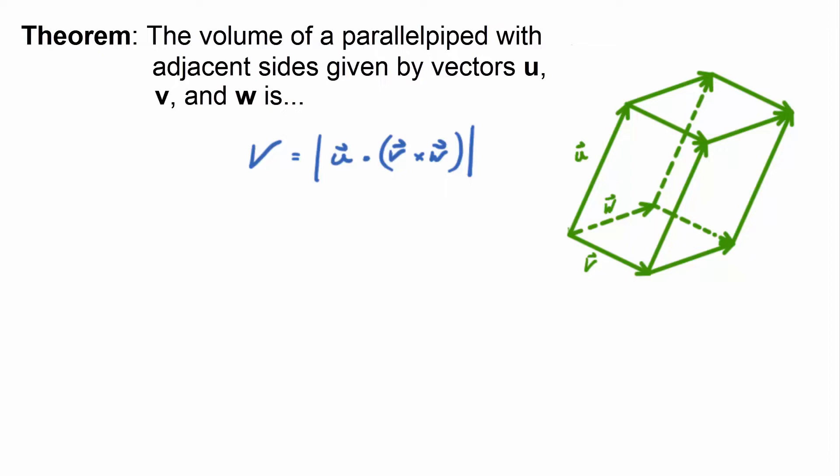What's a parallelepiped? Well, you know, opposite sides are parallel, and it's like a box. So a regular upright box is a parallelepiped, but it could also be tilted. Yeah, that's a parallelepiped.